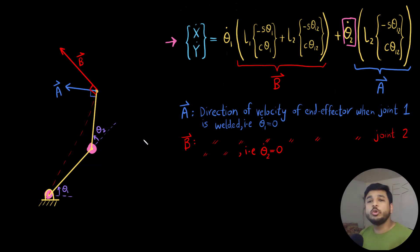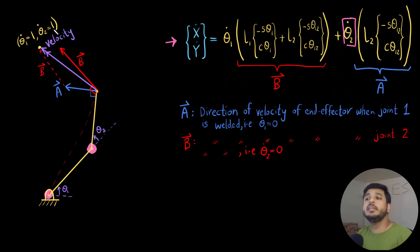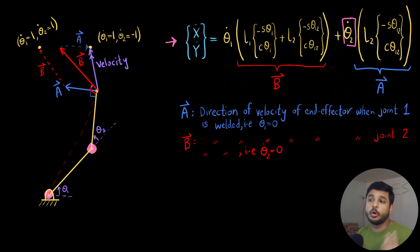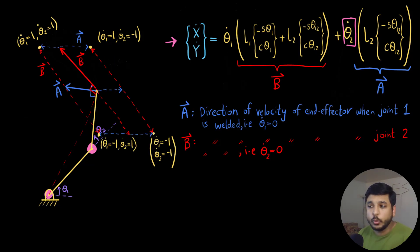If I ask what the velocity of the end-effector is when both θ₁̇ and θ₂̇ are positive one, all you need to do is vector addition, and you end up with a resultant velocity vector. Similarly, if θ₁̇ is one and θ₂̇ is minus one, the contribution from b is positive and from a is in the negative direction, giving a different resultant velocity.